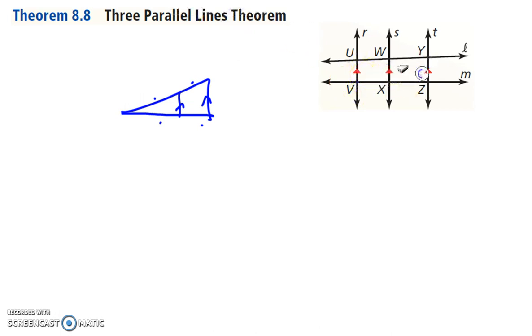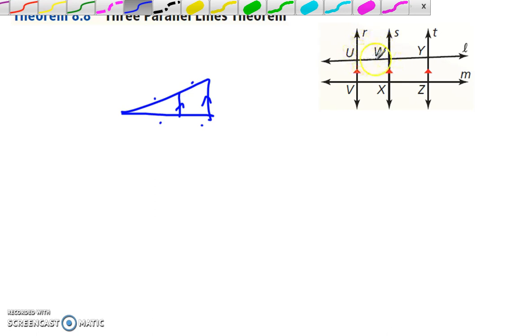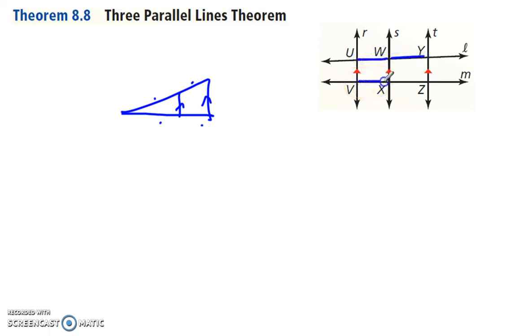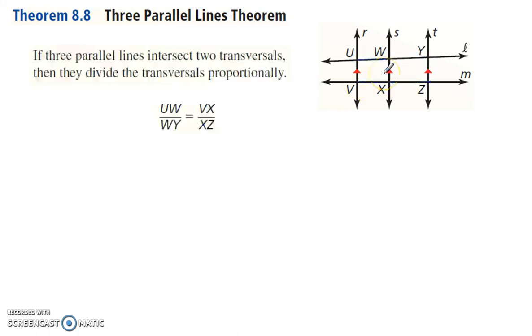We had this segment and this segment is proportional to this segment and this segment. So with the three lines, we have the segment between these two first parallel lines, the segment between the second parallel lines. So U to W and W to Y, this segment to this segment is proportional to these two segments.